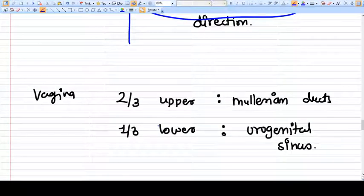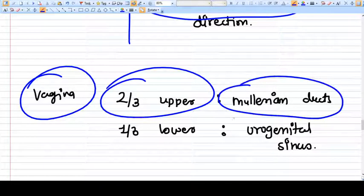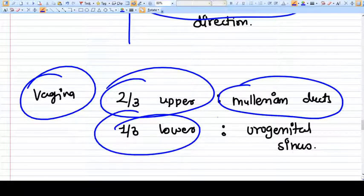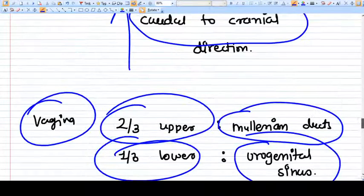And if you see the vagina, the upper two-thirds of vagina is developed from the mullerian duct, and the lower one-third of vagina is developed from the urogenital sinus. So this is the development of female genital organs.